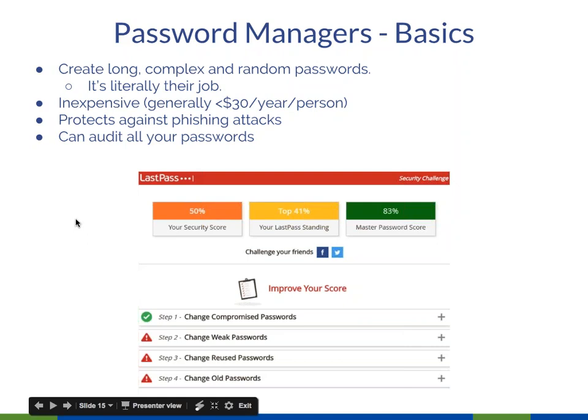Password manager basics: they create complex, random passwords — that's literally their job. You can set LastPass or KeePass to generate 100-character passwords with random alphanumeric characters for every website. They are generally inexpensive: LastPass Personal is $12 a year; the basic version is free. Enterprise versions are around $30 per person per year, or $20 for nonprofits.